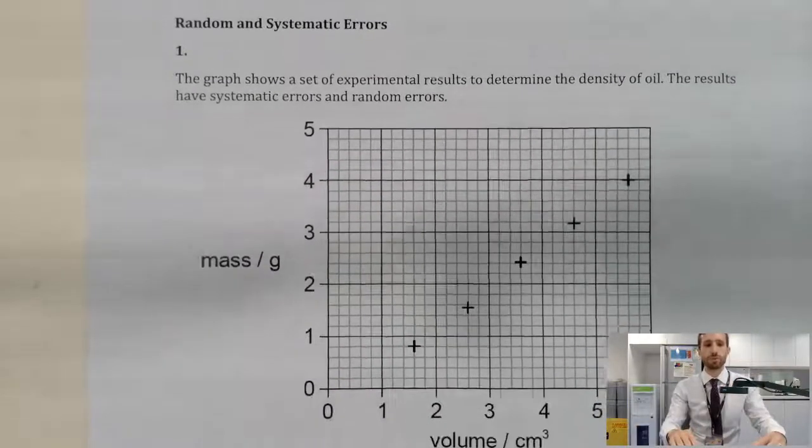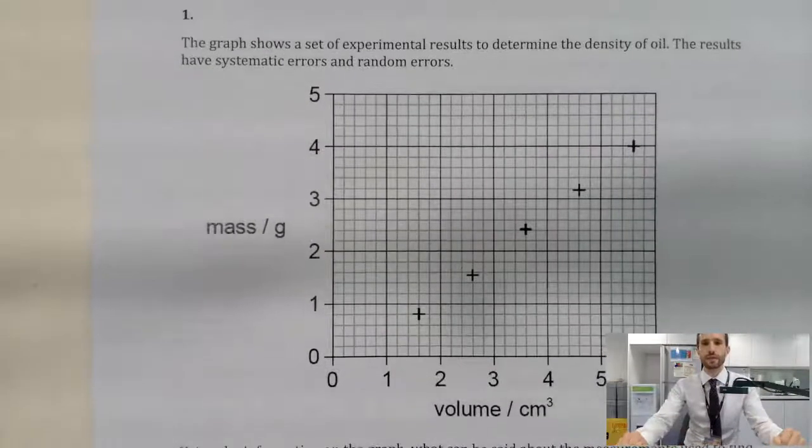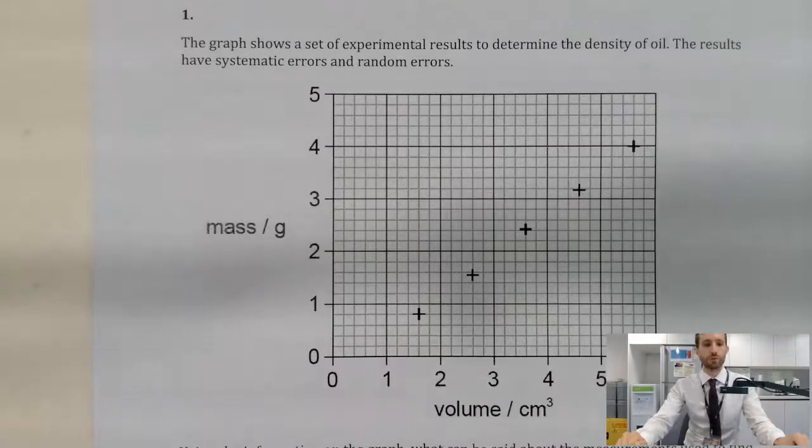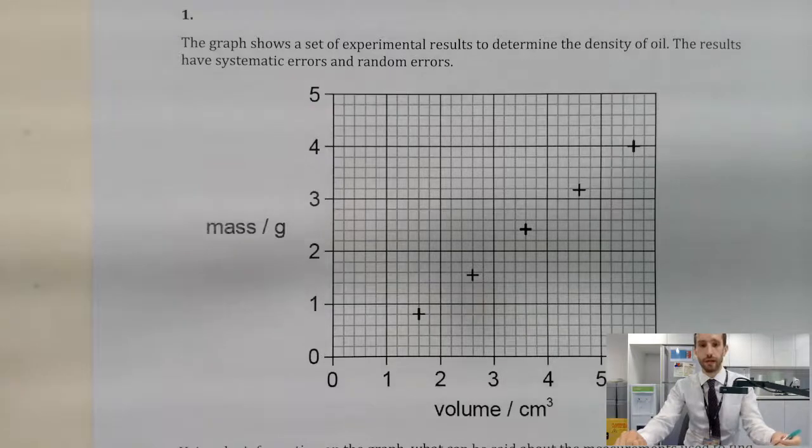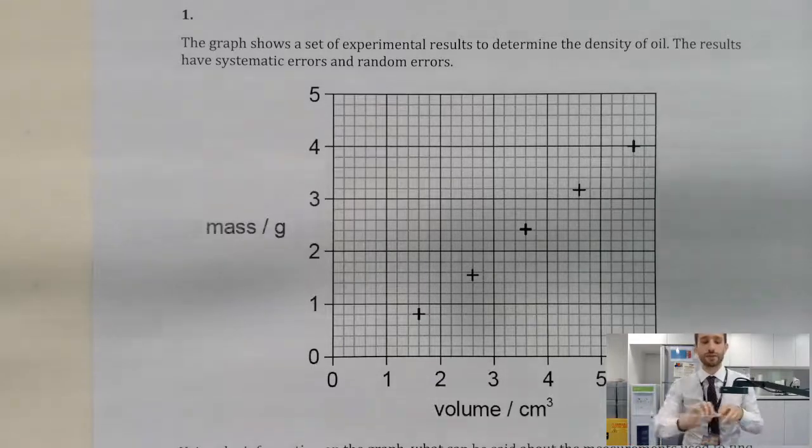So first one, we've got a graph of data. Pretty nice data there, which we'd all like to get from our experiments, but we're being asked to say whether there are systematic or random errors. Before we do so, it's always a really good idea to have a look at the graph itself and think about a straight line, which is why I need a ruler.